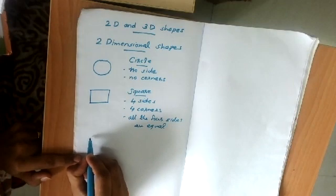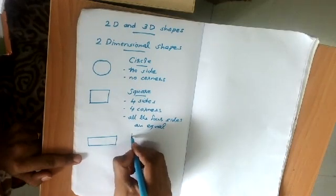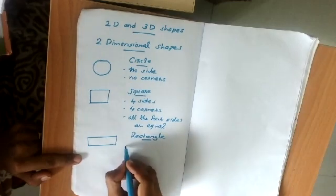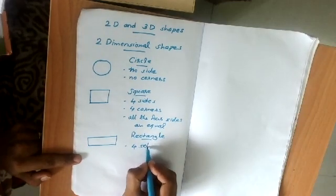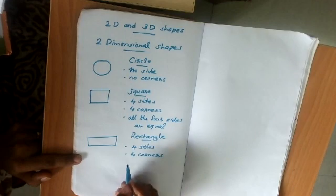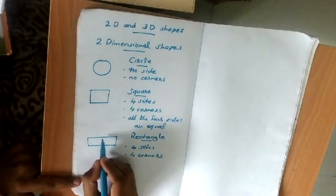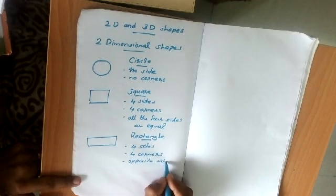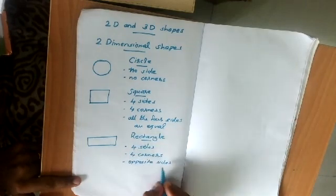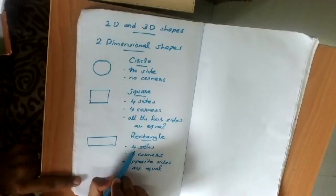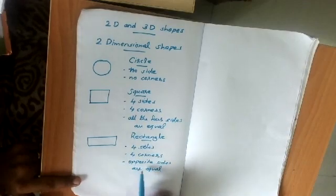The next shape is a rectangle. A rectangle has four sides and four corners. In a rectangle, only the opposite sides are equal in length. So a rectangle has four sides, four corners, and only the opposite sides are equal.